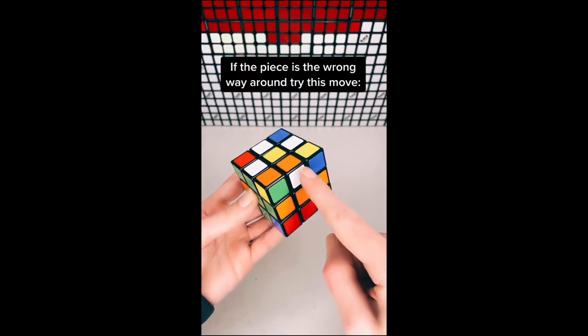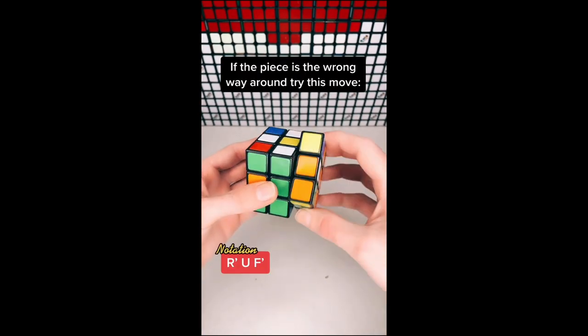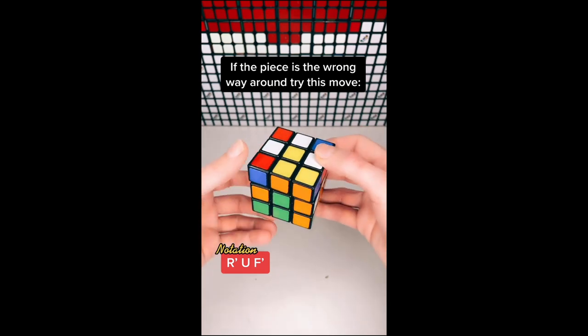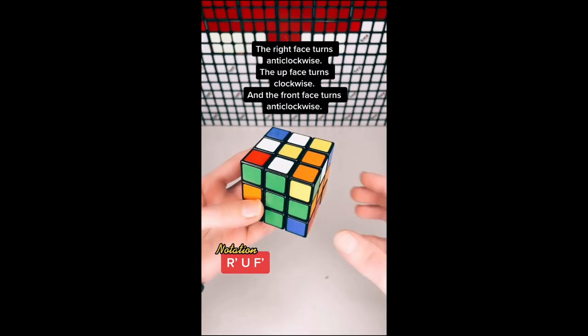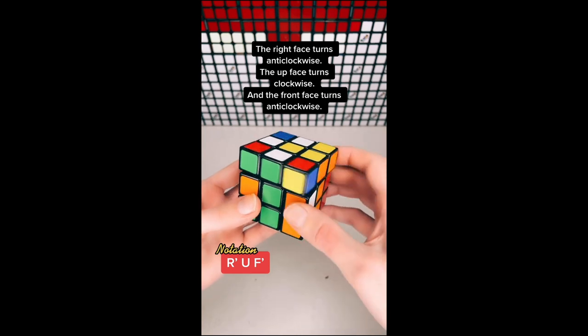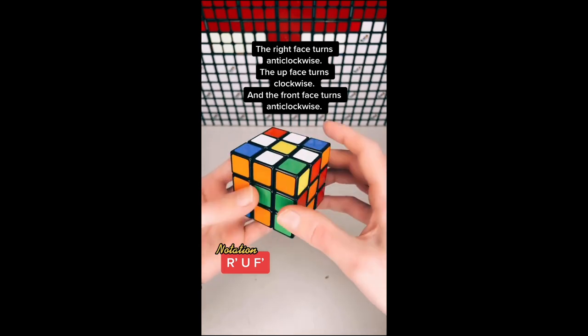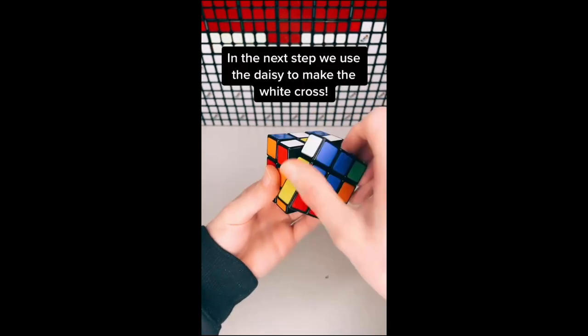If the piece is the wrong way around, try this move. The right face turns anticlockwise, the up face turns clockwise, and the front face turns anticlockwise. In the next step...